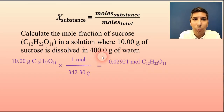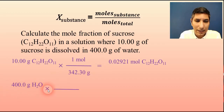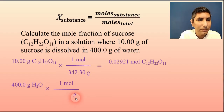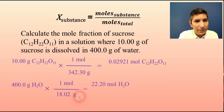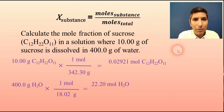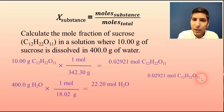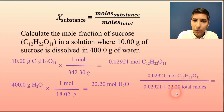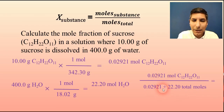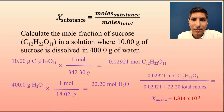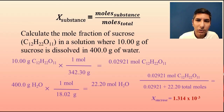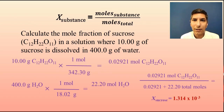Now convert 400 grams of water to moles: one mole over 18.02 grams per mole gives 22.2 moles of water. Now we can solve: put moles of sucrose in the numerator, and the total moles — both values added together — in the denominator. When you divide, you get an answer of about 1.314 × 10⁻³. That is the mole fraction of sucrose in this solution. Notice there are no units — mole fraction is a ratio and therefore unitless.